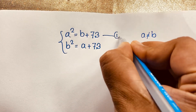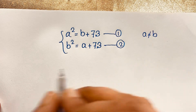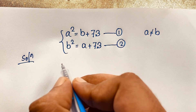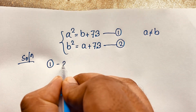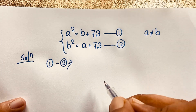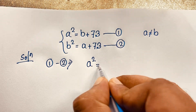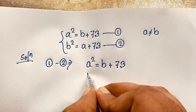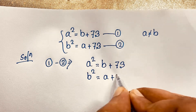This is our first equation and this is our second equation. Now our math solution begins. Our first equation is a squared equals b plus 73, and our second equation is b squared equals a plus 73.